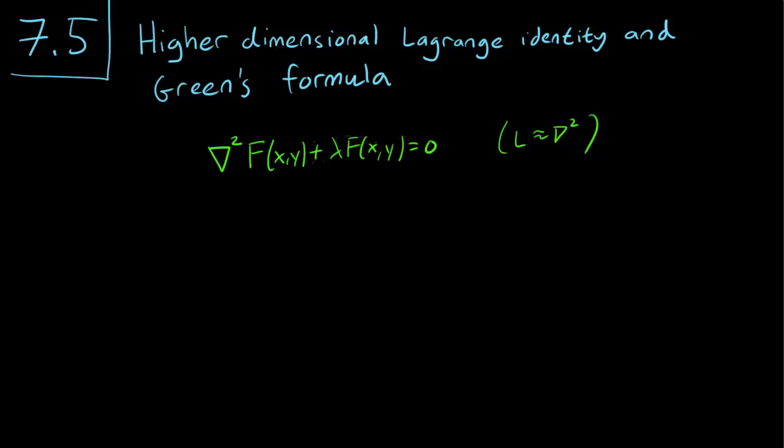However, it would still be nice to be able to tell when this Laplacian operator is self-adjoint, and that's where we need a Lagrange identity or a Green's formula. So let's derive one.